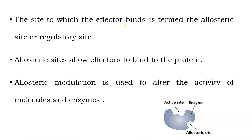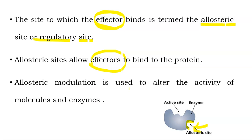The site to which an effector binds is termed the allosteric site or regulatory site. The molecules binding there are called effector molecules. The allosteric sites allow effectors to bind to the enzyme or protein. This allosteric modulation is used to alter the activity of molecules and enzymes. The binding of effector molecules may either increase or decrease the activity of the enzyme.